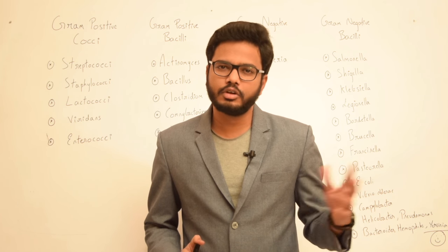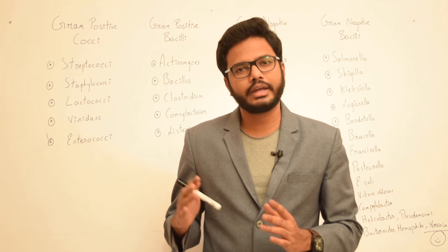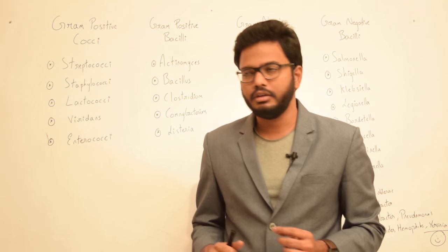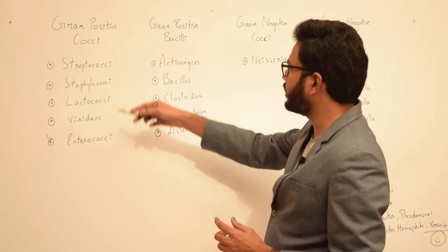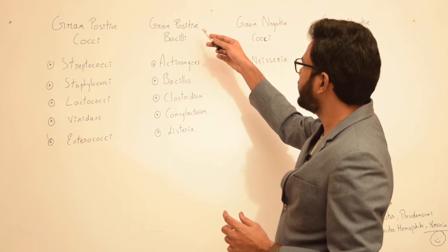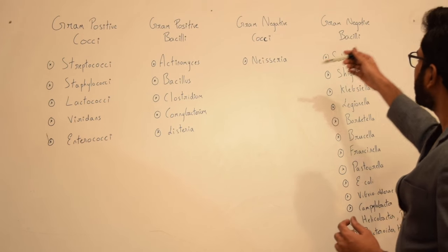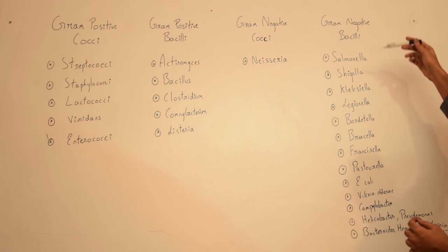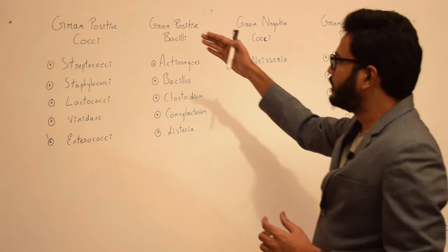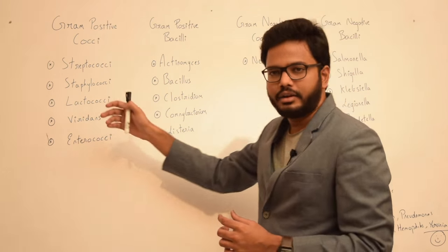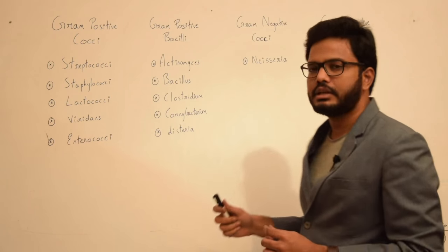In this video I will be sharing a few mnemonics in order to remember easily the various categories of bacteria. As you can see here, we have gram positive cocci, gram positive bacilli, gram negative cocci, followed by gram negative bacilli. Let me read out the names of the microorganisms first and then we will discuss easier ways to remember them.